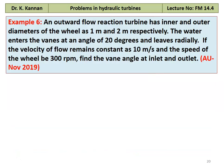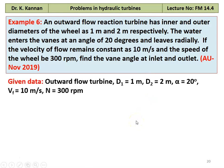Example number 6. An outward flow reaction turbine has the inner and outer diameters of the wheel as 1 meter and 2 meter respectively. The water enters the vane at an angle of 20 degrees and leaves radially. The velocity of flow remains constant at 10 meters per second and the speed of the wheel is 300 RPM. Find the vane angle at the inlet and the outlet. This is from November 2019 question paper. Given data: it is an outward flow reaction turbine, D1 inner diameter 1 meter, outer diameter 2 meter, alpha equal to 20 degrees. Angle of absolute velocity is 20 degrees at the inlet. Velocity of flow Vf is 10 meters per second. Speed N equal to 300 RPM.